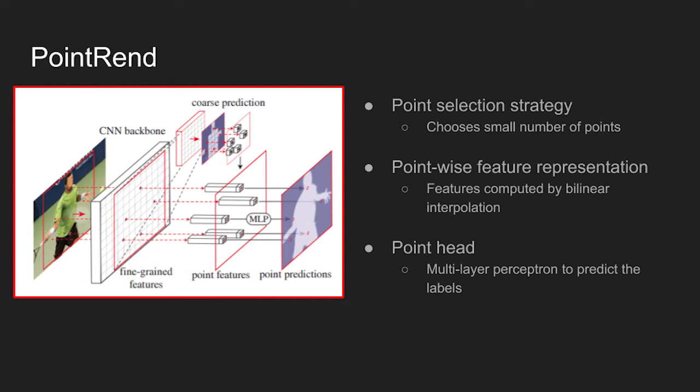On the existing architecture, the PointRend module selects a set of points, represented as red dots, and makes predictions for each point independently using a small multi-layer perceptron.